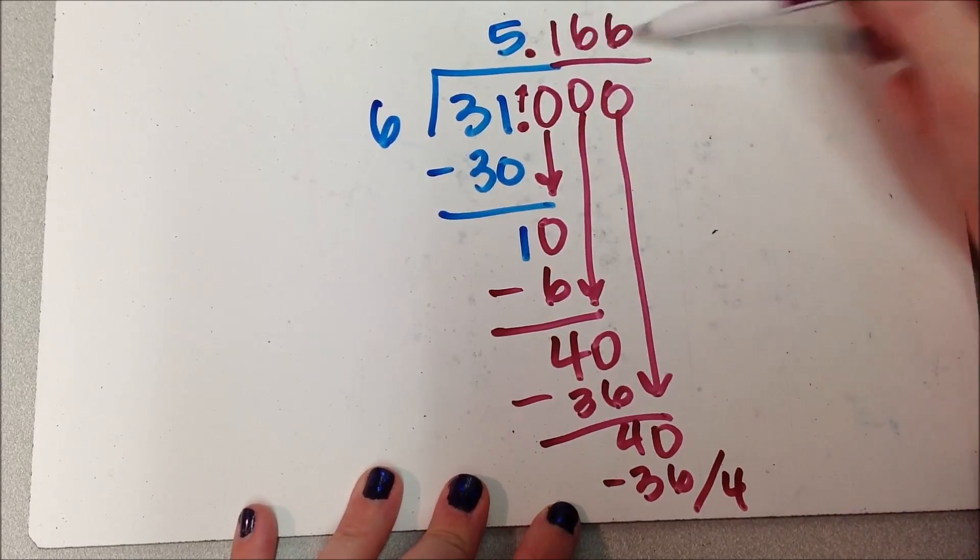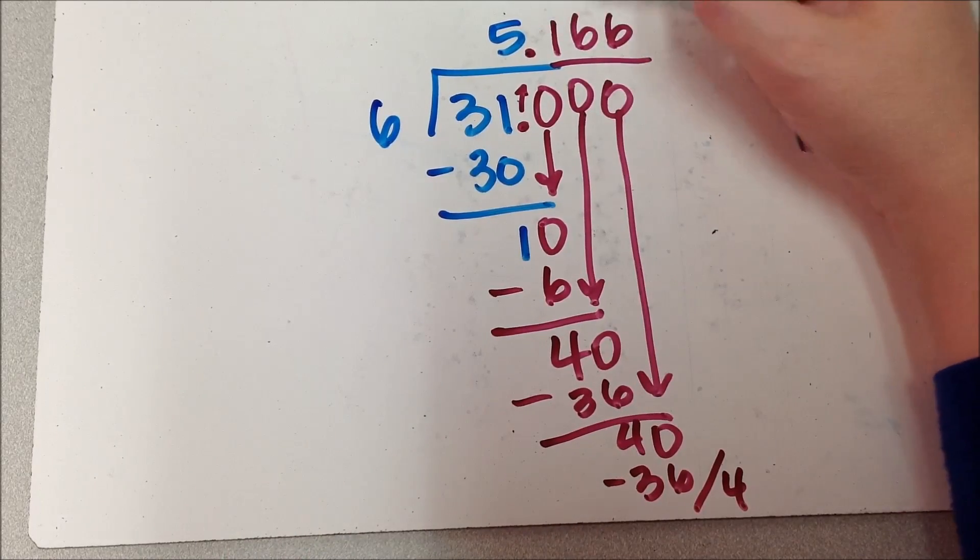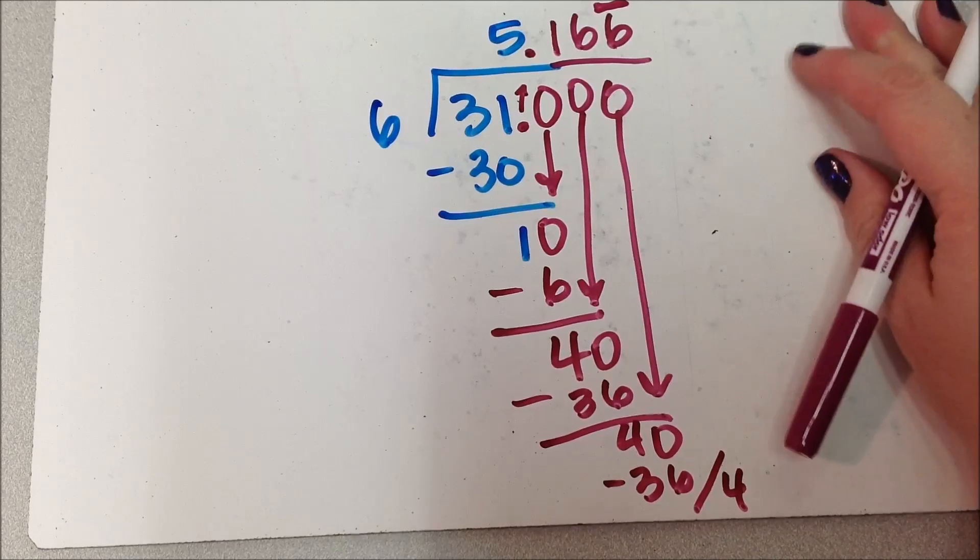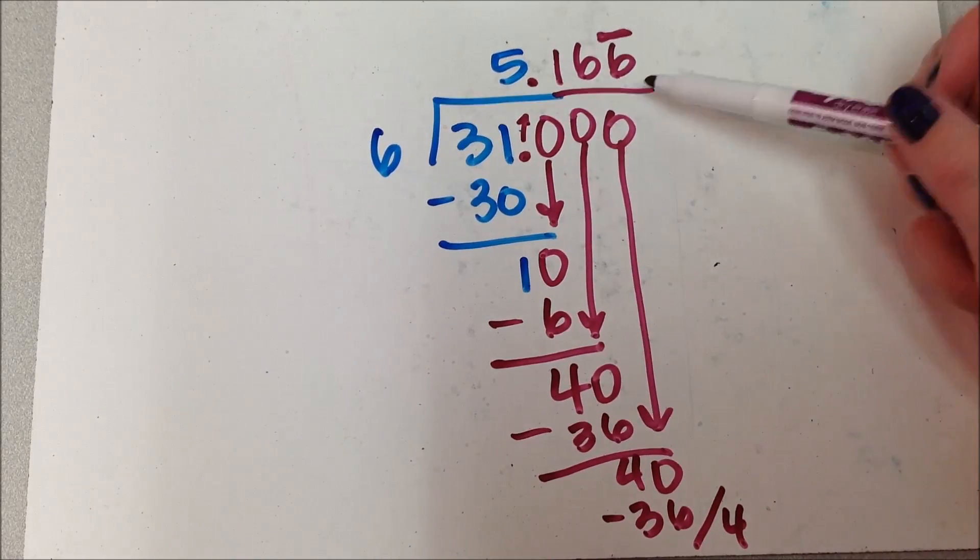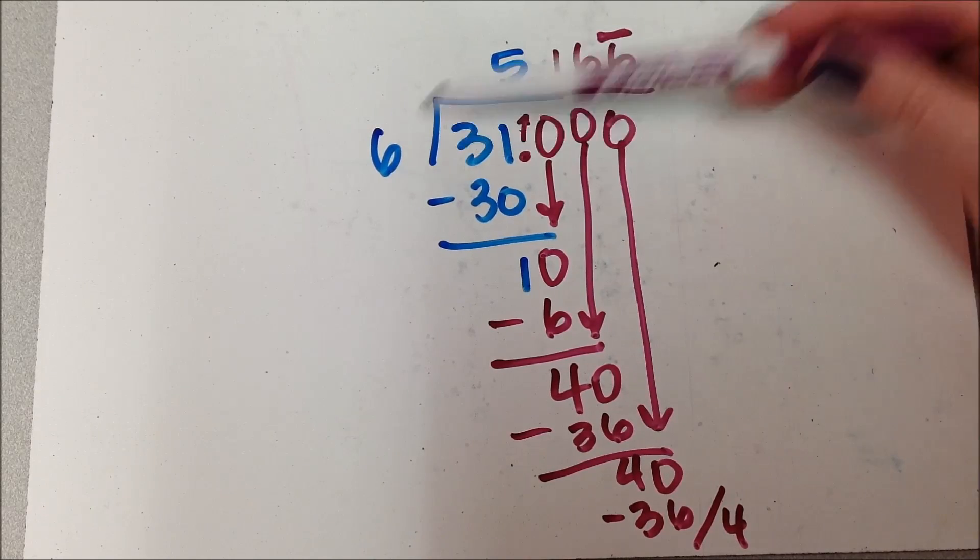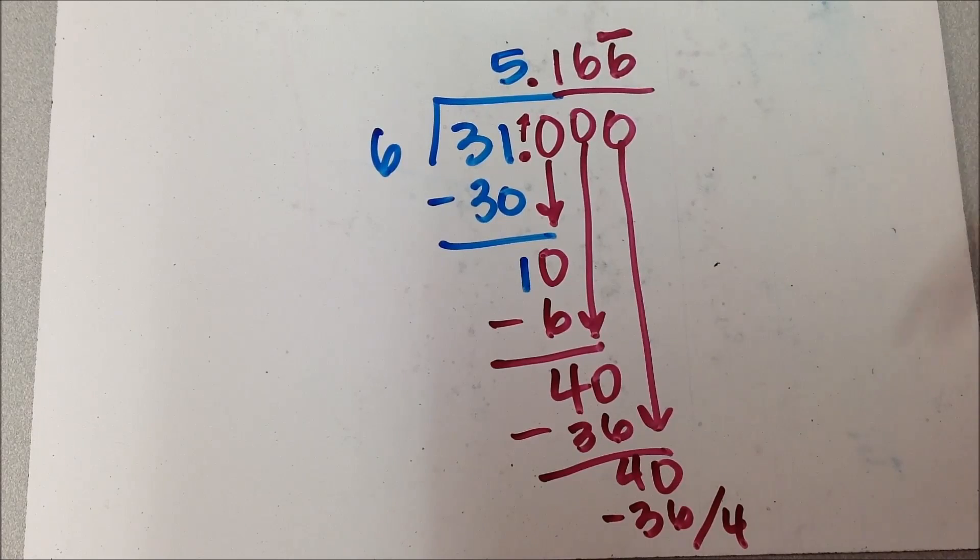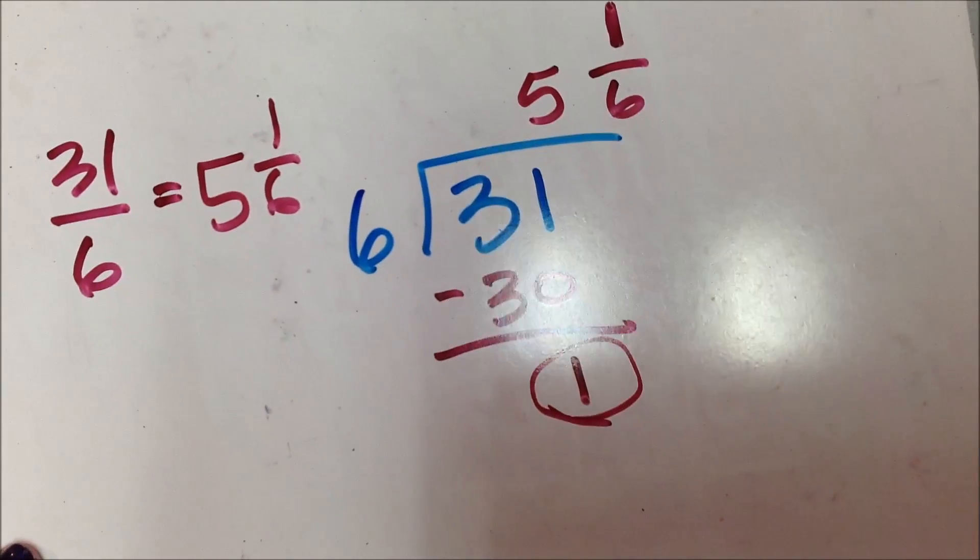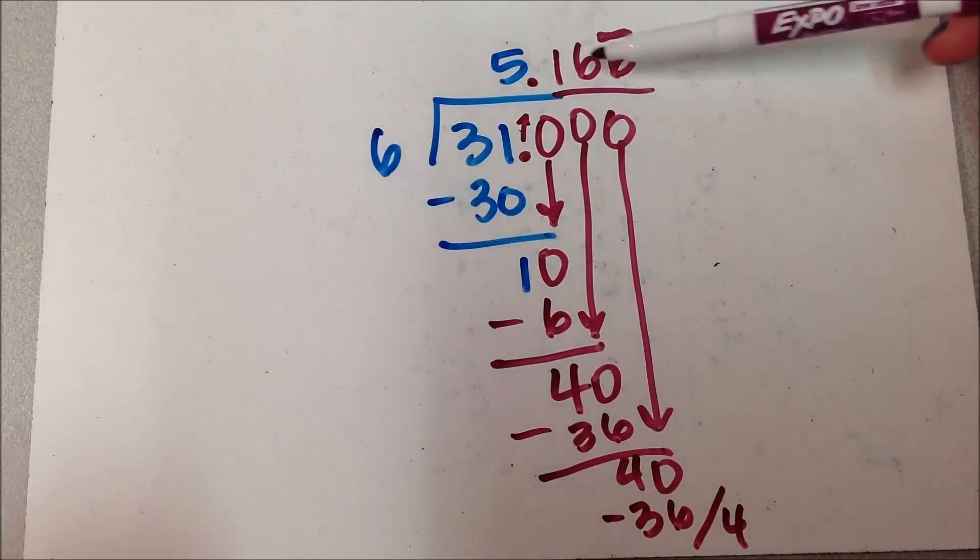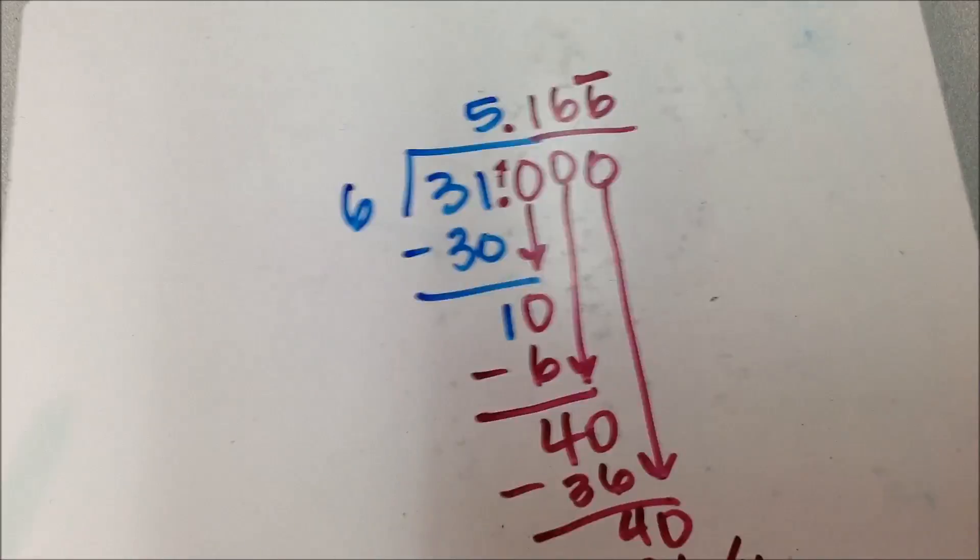If I kept adding 0s, it would just keep having 6s after it forever. So I could write a line over top of that 6, which this indicates that that 6 is repeating. And I would say that 31 divided by 6 is 5.166 repeating. And that would be my answer. So instead of writing it the fraction way, I am going to write it the decimal way.